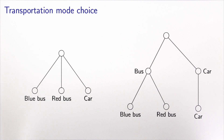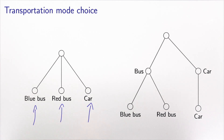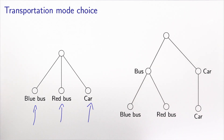The main intuition behind the nested logit model can be summarized in this picture. In the previous video, we considered three alternatives — blue bus, red bus, and car — and we put the three of them at the same level. But we explained this apparent paradox by saying that red bus and blue bus are actually sharing a lot of unobserved attributes.